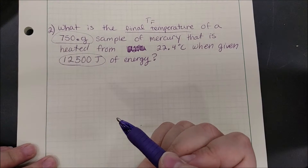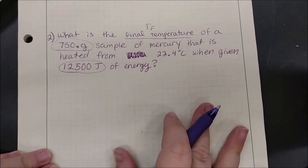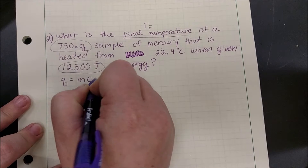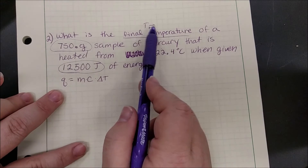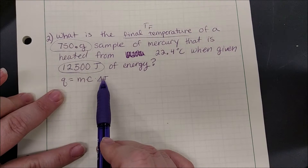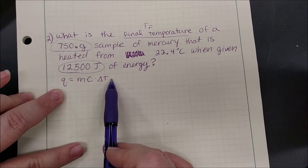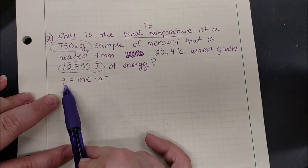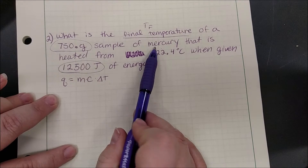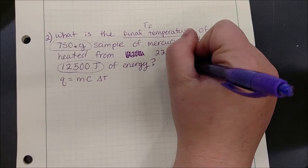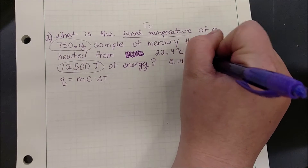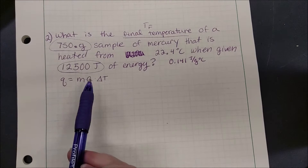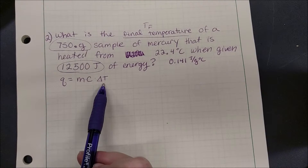We have a few pieces given here. Starting with Q = mcΔT, we're looking for a final temperature, which is a piece of the change in temperature rather than the change itself. We are given a mass and Q of 12,500 joules. For specific heat, the substance is mercury — we calculated mercury's specific heat to be 0.141 joules per gram degree Celsius in an activity. So we have Q, M, and C, but not ΔT — only an initial temperature.